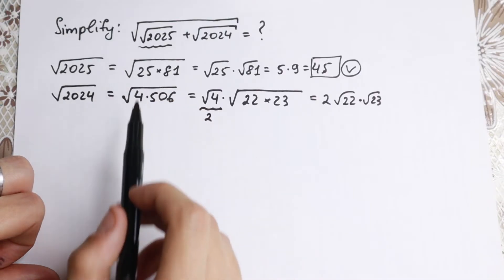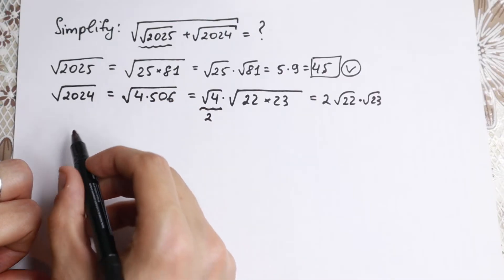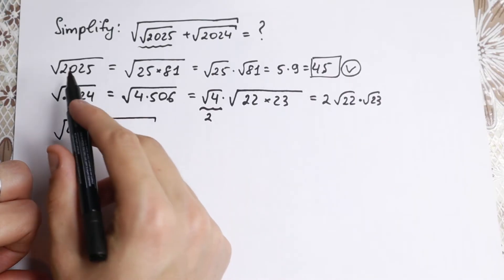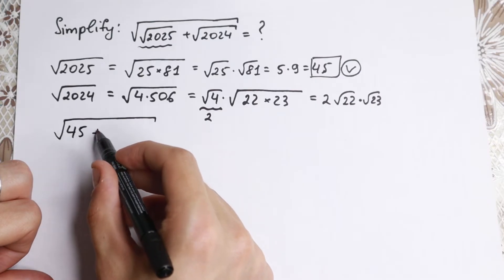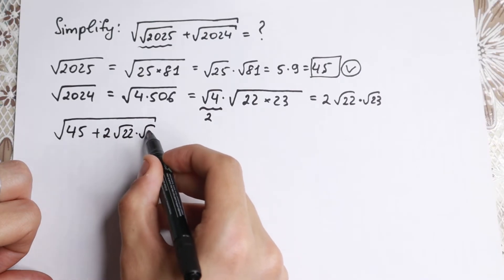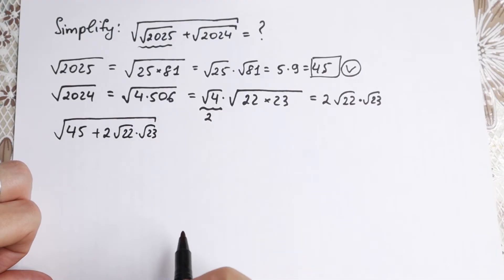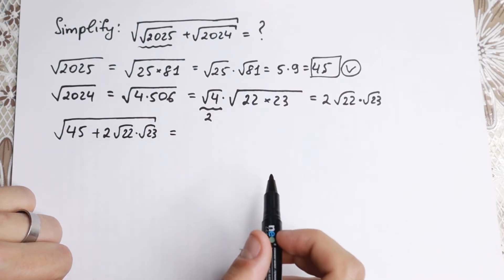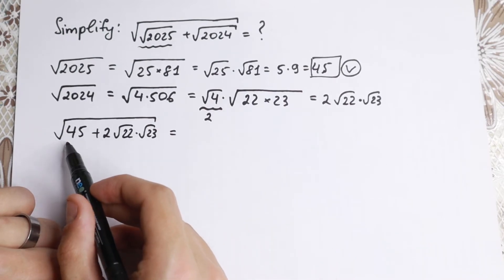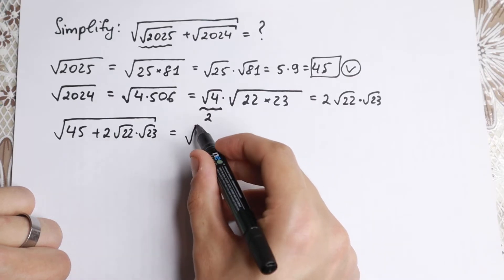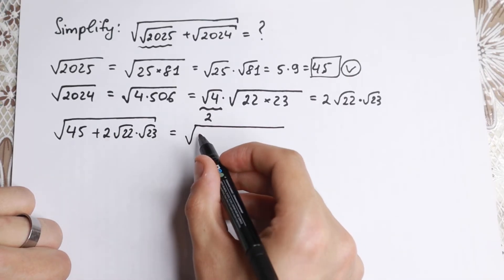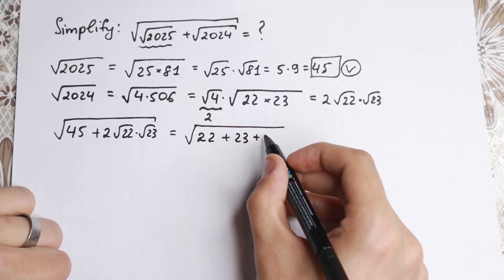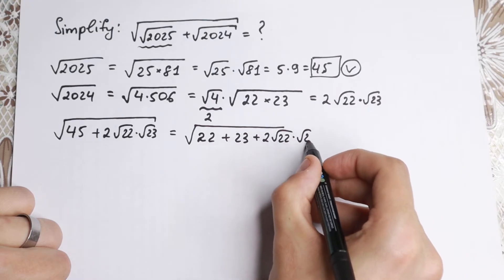Let's go back to our original question and rewrite it with these steps. We have 45 in place of the square root of 2025, plus 2 times the square root of 22 times the square root of 23. Now, this 45 is really good to write as 22 plus 23. So we have, instead of 45, we have 22 plus 23, plus 2 times the square root of 22 times the square root of 23.